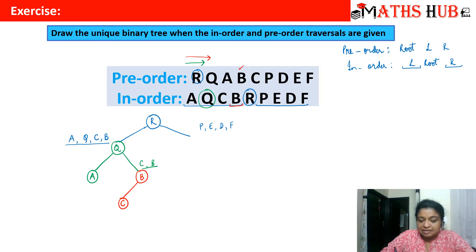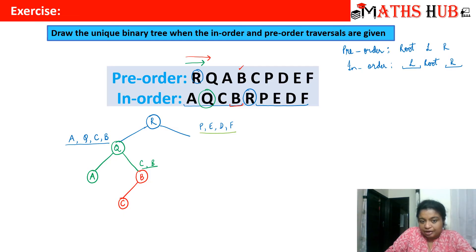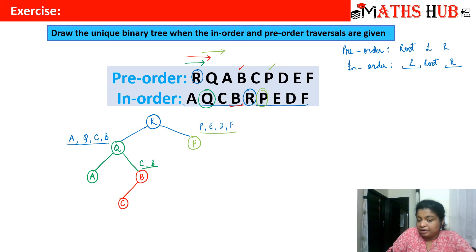We are done with the left subtree. Now let's come to the right subtree with vertices P, E, D, and F. We search the pre-order to see which of these vertices appears first in the sequence. Scanning left to right, P appears first, so P is the next root. Going back to in-order, all the remaining vertices E, D, and F lie towards the right side of P — there is nothing on the left, meaning there is no branch on the left.